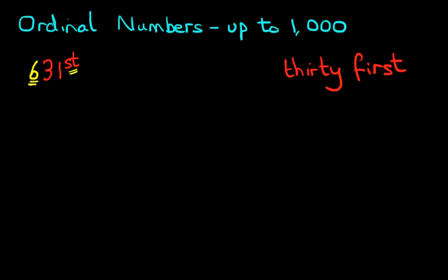How do we write that in words? Well, we keep the 31st over here, and we write down 600 before it. Six hundred and thirty first. And that's it. It really is as simple as that.